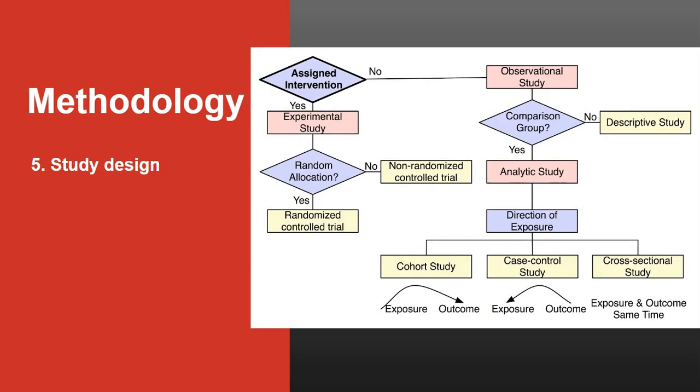Next on the list is study design. To name the study design correctly, we can use this algorithm. Ask yourself whether you assign any intervention or not. If yes, it is an experimental study. Ask the next question whether the intervention is allocated randomly or not. If yes, it is a randomized control trial. If no, it is a non-randomized control trial. If you are not assigning any intervention, then that is an observational study. Then ask whether you have a comparison group or not. If you don't have, then that is a descriptive study.